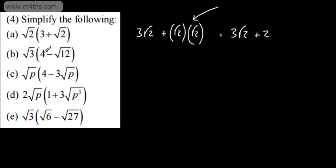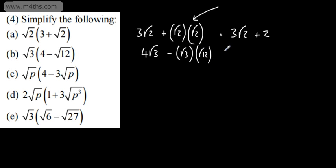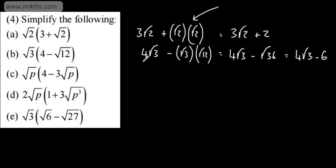Now I've got the root of 3 multiplied by the quantity 4 minus root 12. It's entirely up to me if I want to simplify first or multiply out and tidy up — I'm going to multiply out then tidy up. Multiplying root 3 by 4 gives me 4 root 3. Then minus root 3 multiplied by root 12. Using root A times root B equals root(AB), this is root 36, and the square root of 36 is 6. So we get 4 root 3 minus 6.